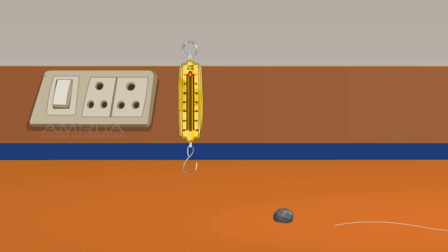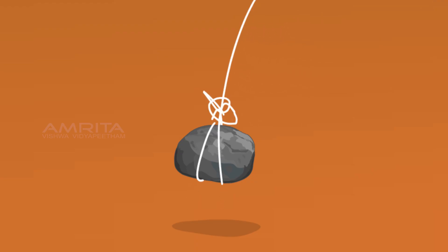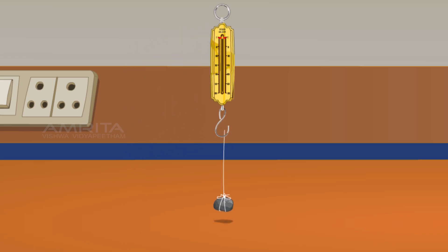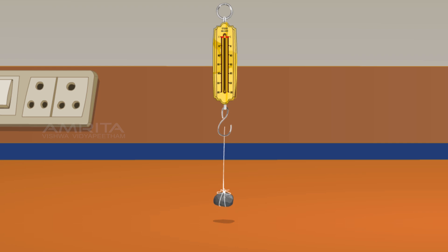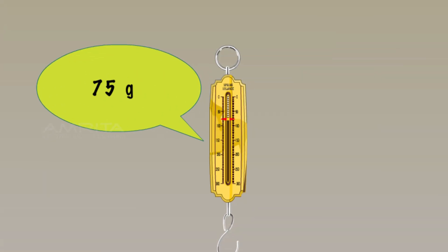Stone. Use a spring balance, a stone, and a piece of twine. Tie the stone using the twine. Now, weigh the stone using the spring balance by looping the free end of the twine to the spring balance and suspending it vertically. The mass of the stone is 75 grams.